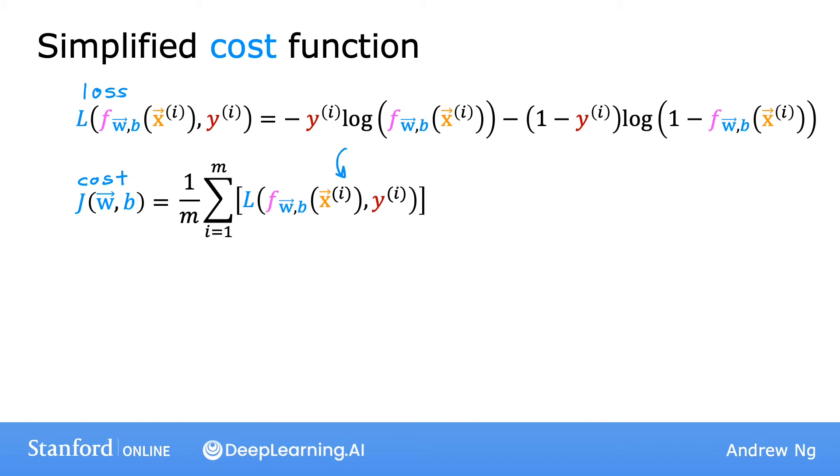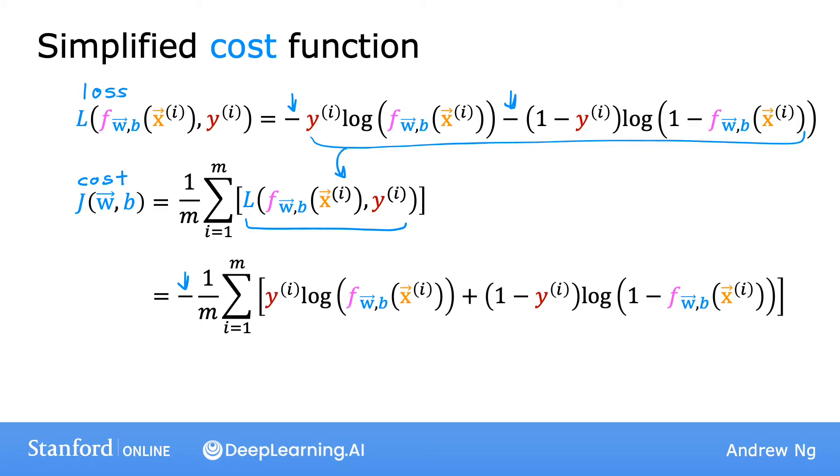Now, if you plug in the definition for the simplified loss from above, then it looks like this: 1 over m times the sum of this term above. And if you bring the negative signs and move them outside, then you end up with this expression over here. And this is the cost function, the cost function that pretty much everyone uses to train logistic regression.